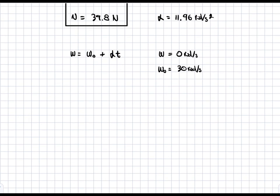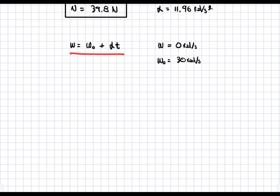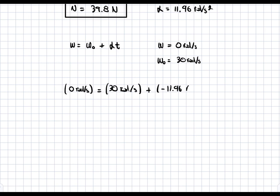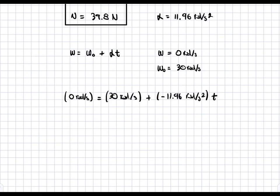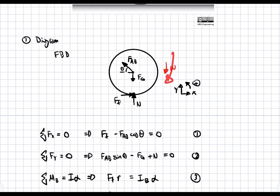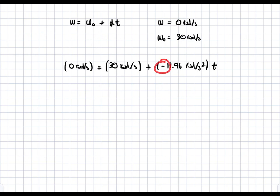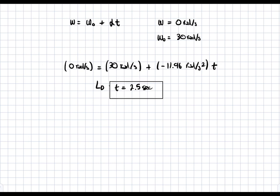The formula relating omega, alpha, and time is: omega final equals omega initial plus alpha times t. We know the final omega is zero radians per second because we want the wheel to stop. We plug in: 0 = 30 + (negative 11.96) times t. The negative sign is needed because alpha and omega are in opposite directions — omega is clockwise and alpha is counter-clockwise. Without the negative, we'd get a negative time, which is not physically possible.